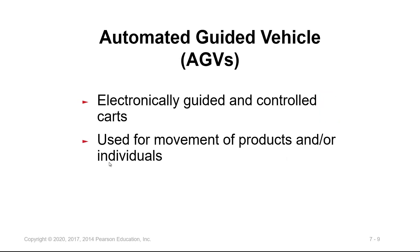Automated guided vehicles are electronically guided and controlled carts used for movement of products, individuals, or even components of a product. This is another technology that plays a huge factor in improving processes and increasing efficiency.